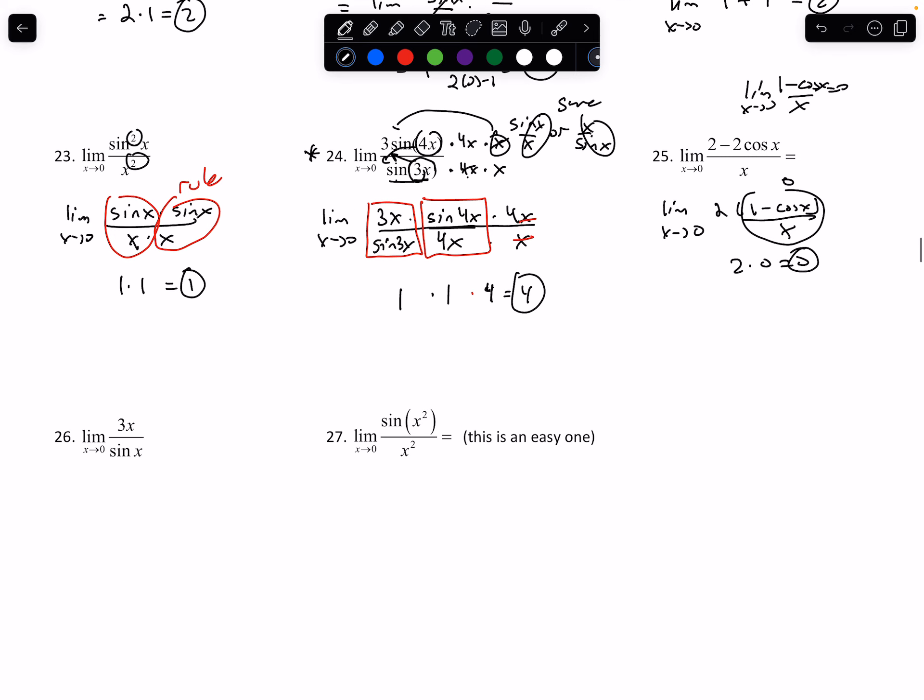Number 26. This is a tricky one. People always forget about it. Remember, this is my sine of x over x. But there it is, right there. There is my sine of x over x. So if I kind of rewrite it to make it look a little bit better, I can write this as 3 times x over sine of x. So remember, this is just 3. This is just 1. So we're left with 3.